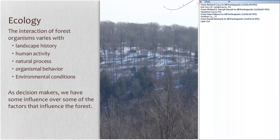These interactions of forest organisms vary with landscape history — how the landscape has changed over time — and they vary with human activity. Eventually we'll get to a draft model of how humans might intervene in the ecological processes of the forest. There are natural processes that we need to think about, plus the way organisms respond and the attributes that individual organisms have in their environmental conditions. This is roughly an outline of the things we'll be talking about in the first half of this presentation.